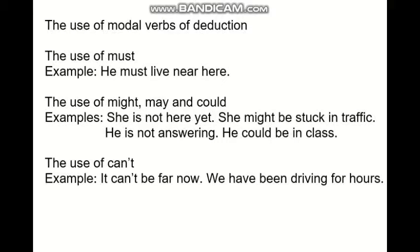Another example: 'He is not answering — he could be in class.' Now the use of can't. We use can't when we feel sure that something is not possible. For example: 'It can't be far now, we have been driving for hours.' In general, we can use modal verbs for deduction — guessing if something is true using the available information. The modal verb we choose shows how certain we are about the possibility.